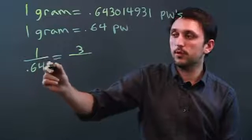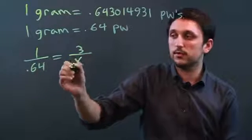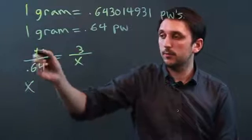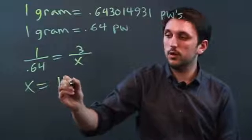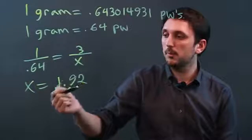Say 1 is to 0.64 as 3 is to x, and then you cross multiply. So x times 1 equals 3 times 0.64, which is 1.92 penny weights.